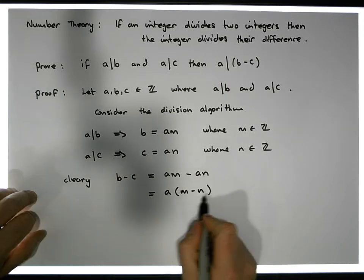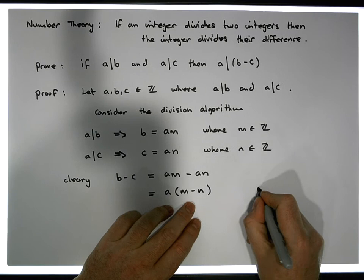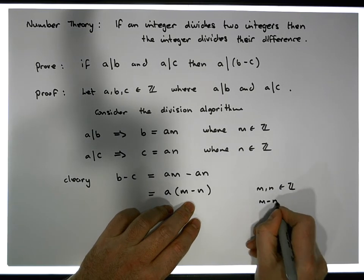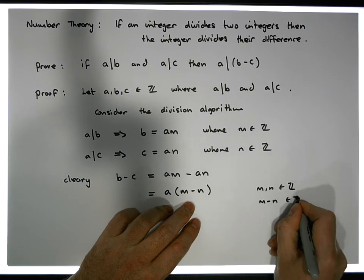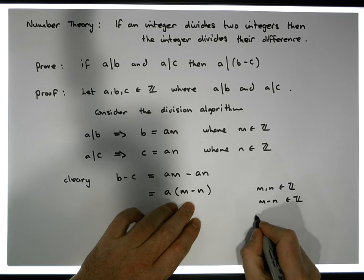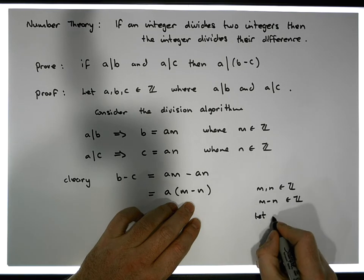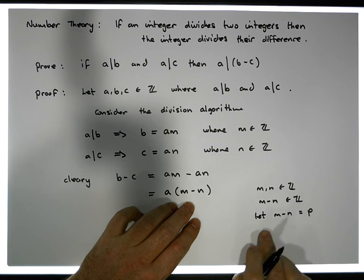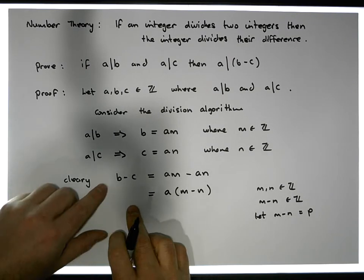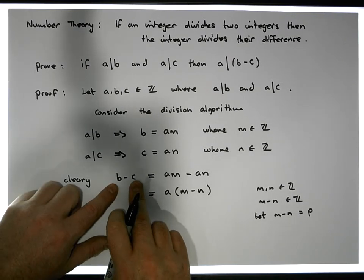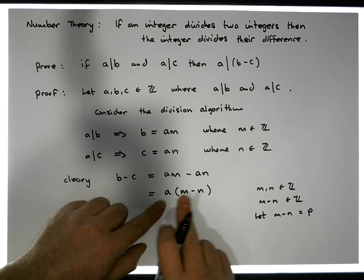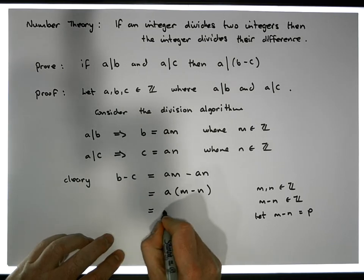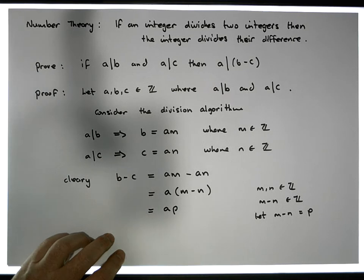Now what is M minus N? Well, M and N are integers, so M minus N is also an integer. And let's say that this particular integer here is P, so M minus N equals P, which is an integer. So what we've shown here is that B minus C is now equal to A times some integer P.